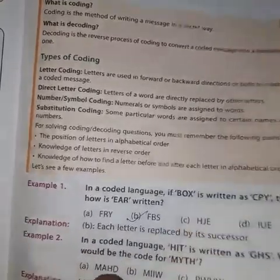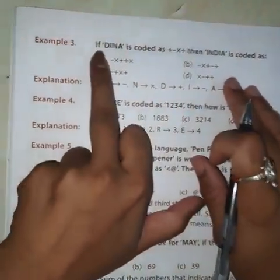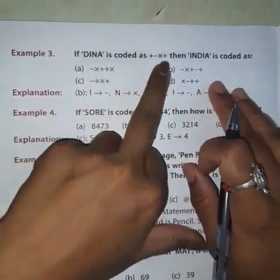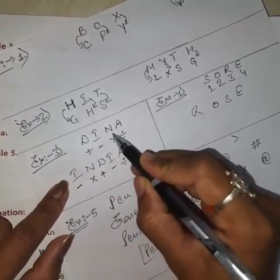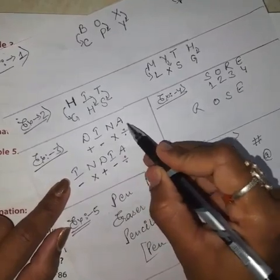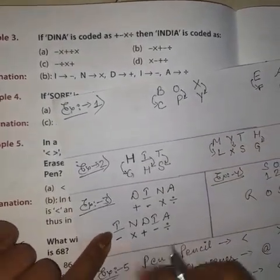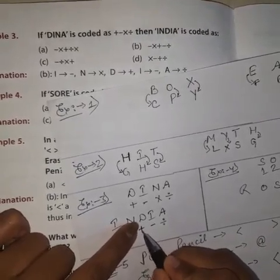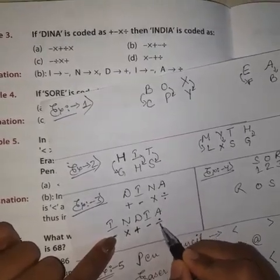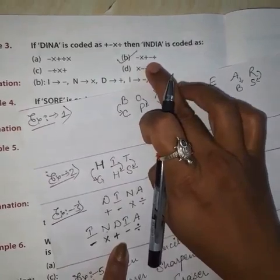Example 3, which is related to number and symbol coding. If DINA is coded as plus, minus, multiplication, and division, then how is INDIA coded? I is subtraction, N is multiplication, D is addition, I is again subtraction, and A is again division. So the correct option is B: subtraction, multiplication, addition, subtraction, and division.